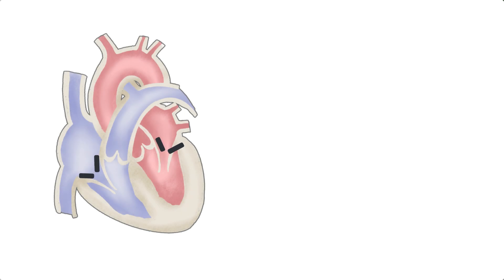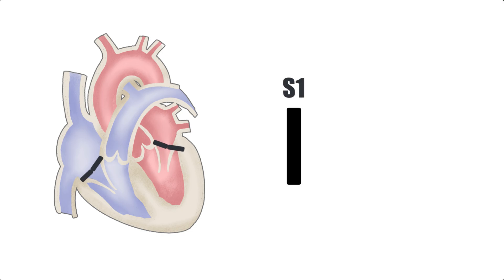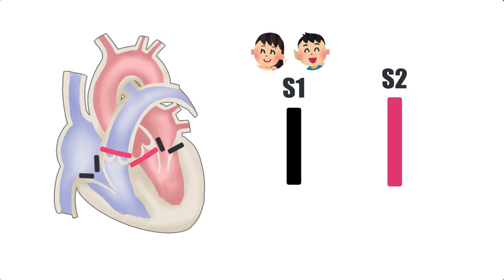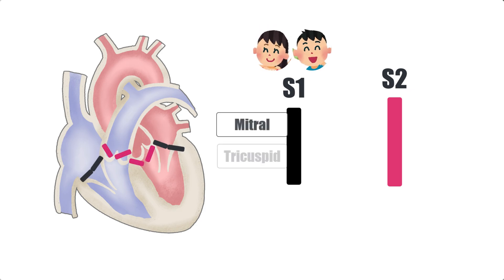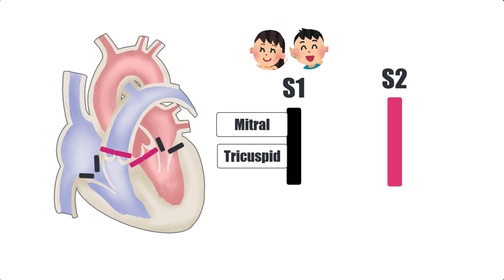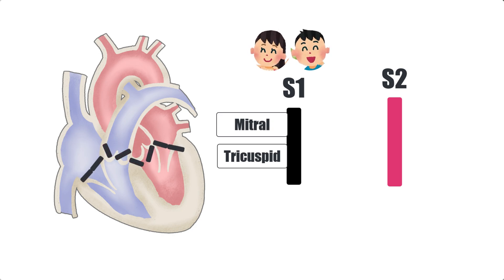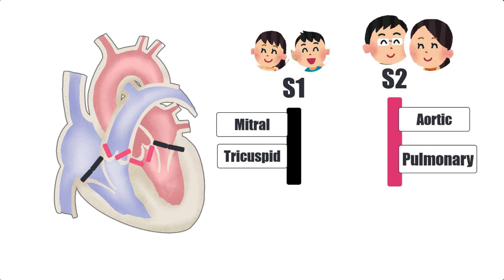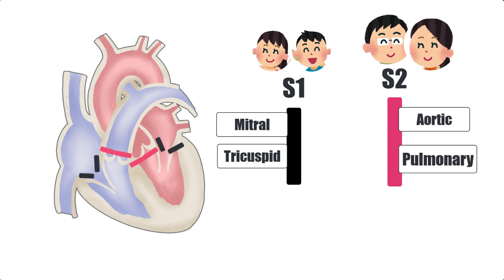So the mitral and tricuspid valves will close roughly at the same time, giving the total sound of S1 — heart sound one. And the aortic and pulmonary valves will also close at roughly the same time, giving the second heart sound, S2. So S1 is the combination of both the mitral and tricuspid valves closing together as the children play together, and S2 is the combination of both the aortic and pulmonary valves closing together as the parents remain in sync.